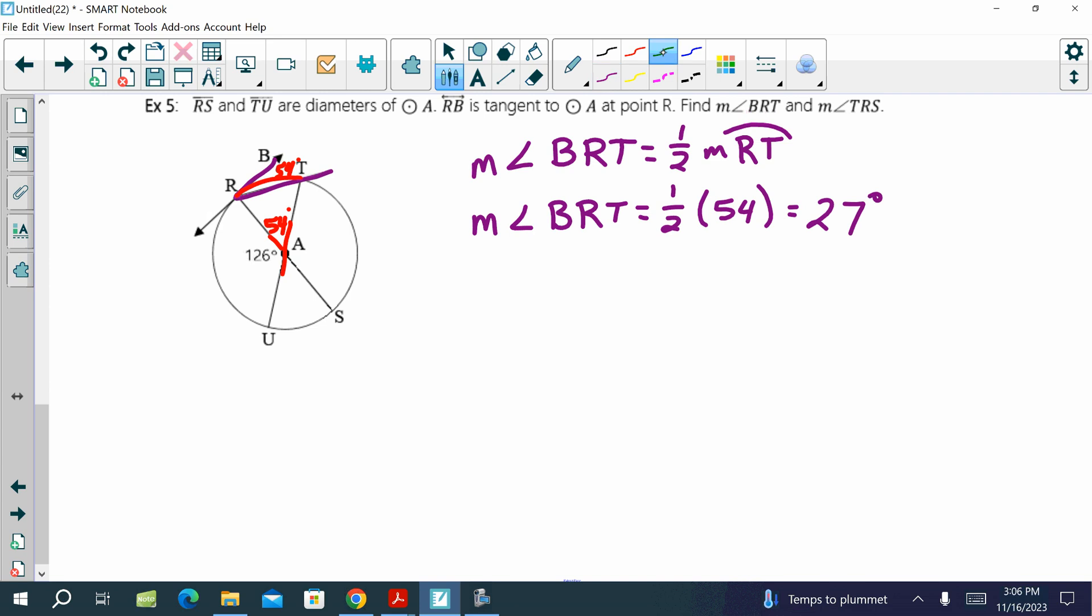Now we need to find the measure of angle TRS. So TRS is right here. How would we possibly know that? A tangent line to the radius is a right angle. How is that going to help us? 90 minus 27. So we can take the knowledge of our last theorem. We have a right angle with a tangent and a radius. So we can do 90 minus the 27 and get 63 degrees.